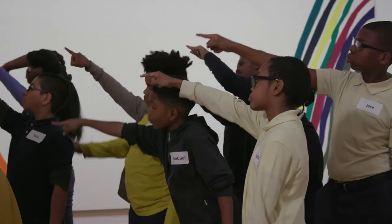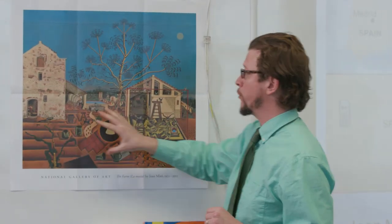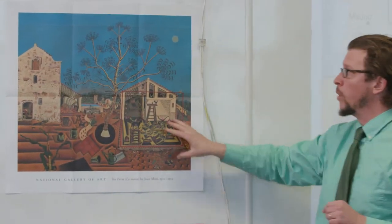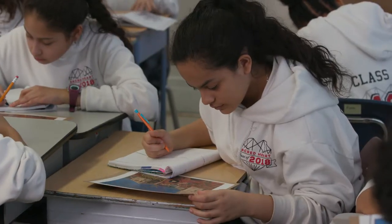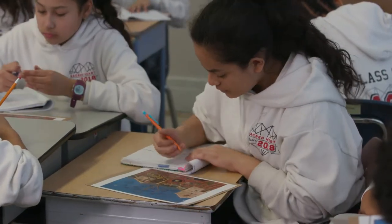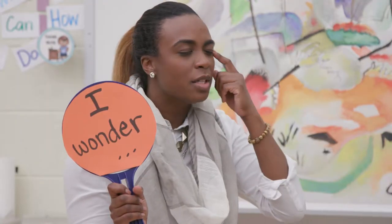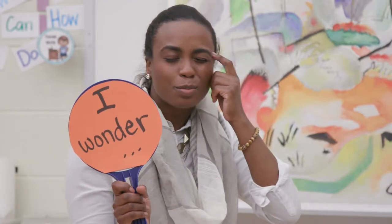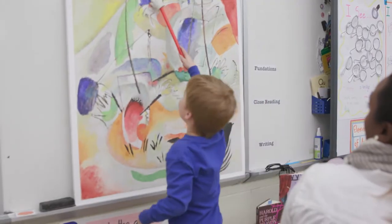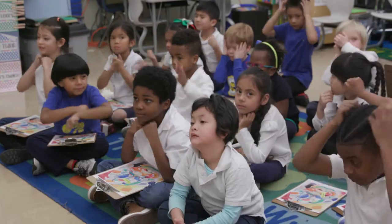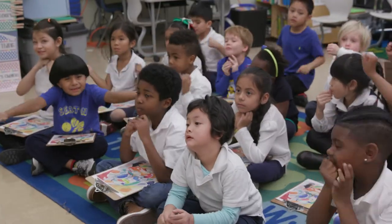Congratulations, you've made it to the fourth and final section of Teaching Critical Thinking Through Art. You've practiced slowing down to observe and describe, you've learned strategies to develop evidence-based reasoning, and you've dipped into questioning with See Think Wonder. Now we'll dive deeper into wondering.